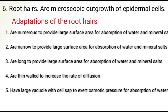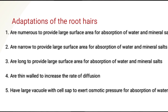Number four, root hairs are thin-walled for a faster rate of diffusion. Number five, they have a large vacuole with cell sap to exert osmotic pressure for the absorption of water.